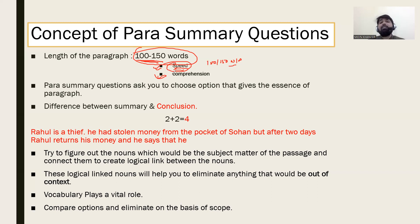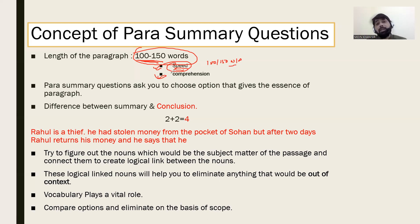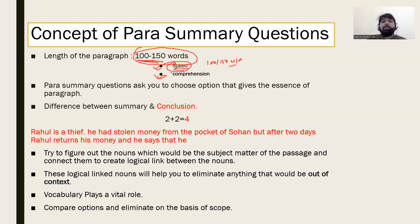Along with speed, comprehension is also important — I have bolded the comprehension part. What it means is that along with speed, your comprehension must also be strong. Many students from Bihar and UP are now running towards CAT and management entrance exams because government vacancies are not coming. But after getting into management, they find that there are many reads to do, many paragraphs to read and understand — their reading speed is weak and their comprehension is also weak.